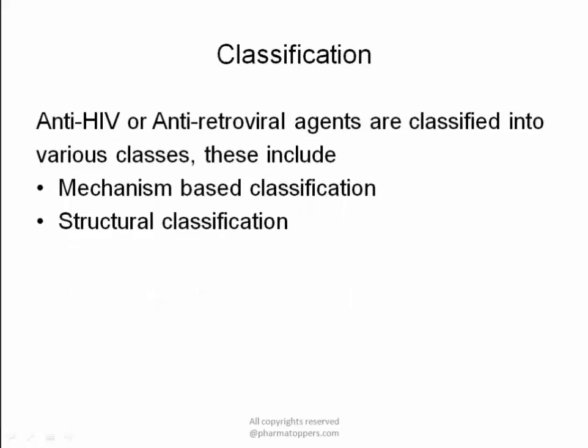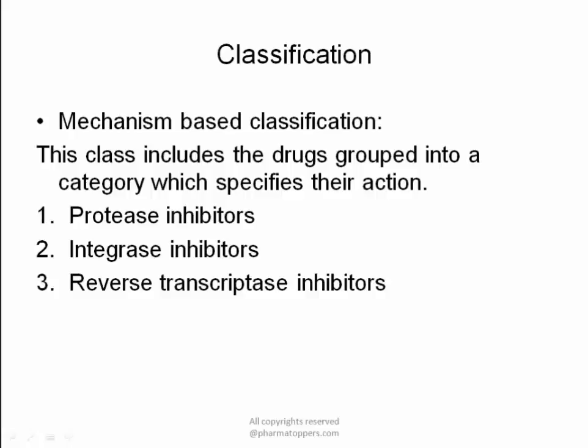Anti-HIV agents, or anti-retroviral agents, are classified into two classes: firstly, the mechanism-based classification, and secondly, the structural-based classification. Under mechanism-based classification, the drugs grouped under this class show a similar or specific kind of action — it depicts the mechanism by which these agents act.